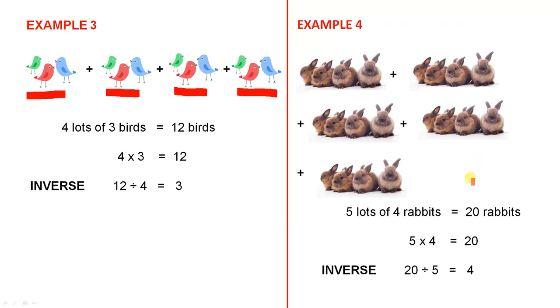Example 4. Five lots of four rabbits. Twenty rabbits altogether. Five fours are 20. Twenty divided by five equals four. So, five is the number of groups, and four gets you back to the number of rabbits in each group. Division undoes multiplication.